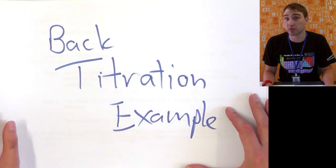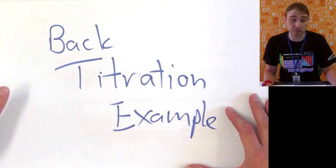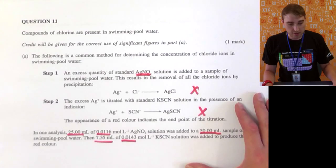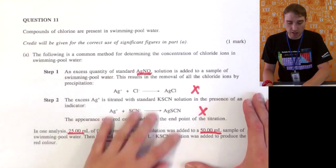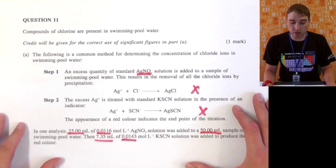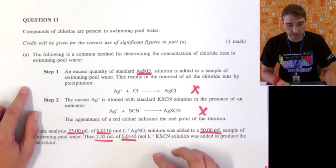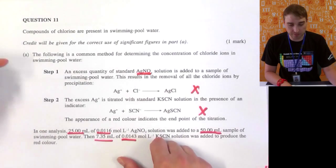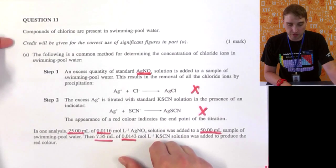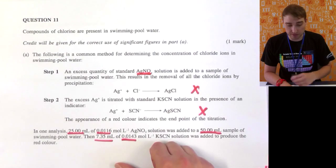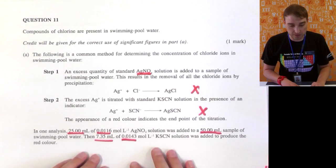We're going to look at an example from an old exam. Here's the question and I've highlighted some of the important information. It says compounds of chlorine are present in swimming pool water. Credit will be given for correctly significant figures in Part A, so we need to make sure we use the right number of significant figures.